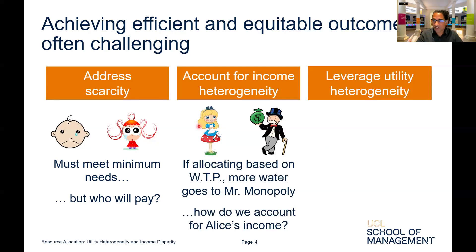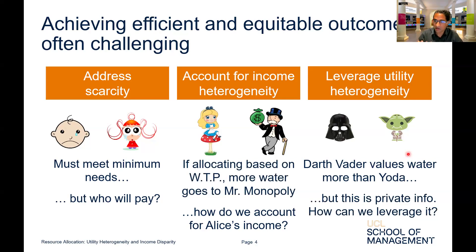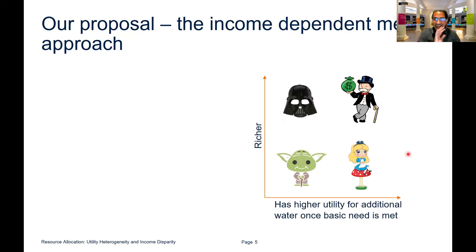The third challenge is to leverage utility heterogeneity. For example, Darth Vader may value water more than Yoda — how can we leverage this fact? Although this information is private to Darth Vader, how do we use it? Our proposal is an income-dependent menu approach. Let's consider four types of customers: two richer customers and two poorer customers — the allocation authority knows this income information.